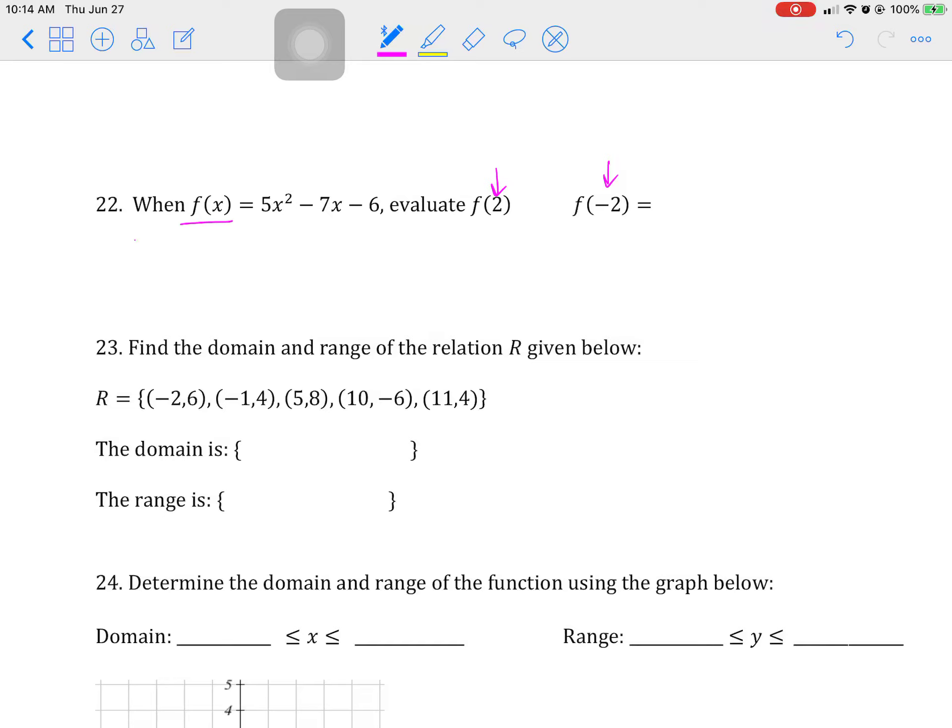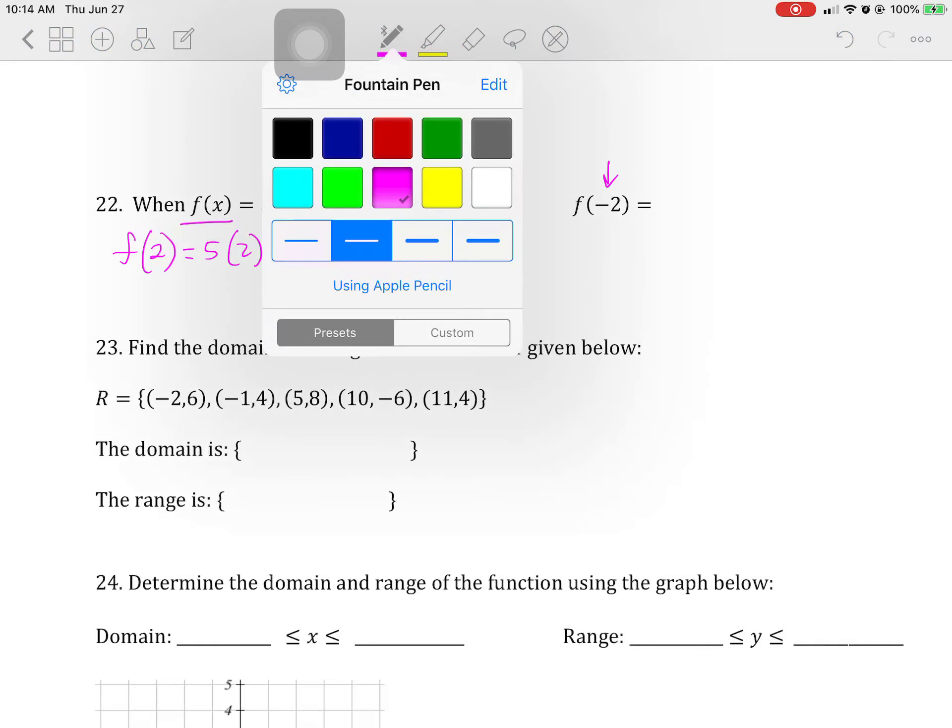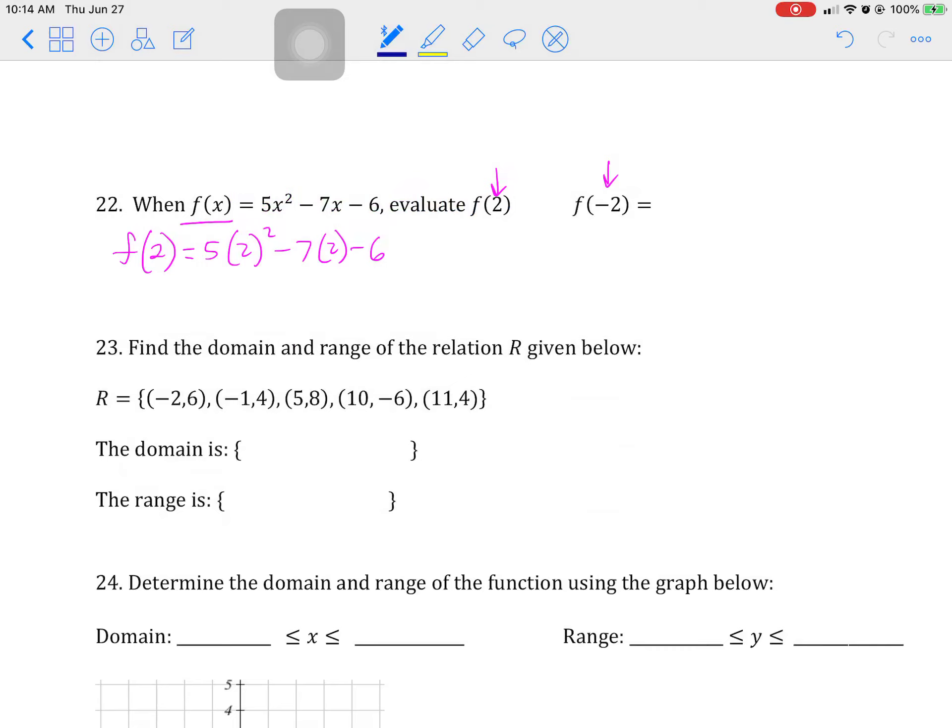Step 1, substitute all the x's for the 2 for the first case. Orders of operations say you process that part first for the exponent, and you can do this one. This will be 9 minus 14 minus 6.